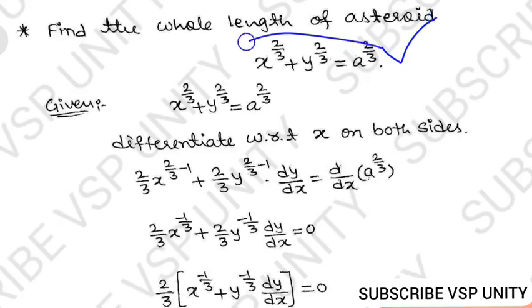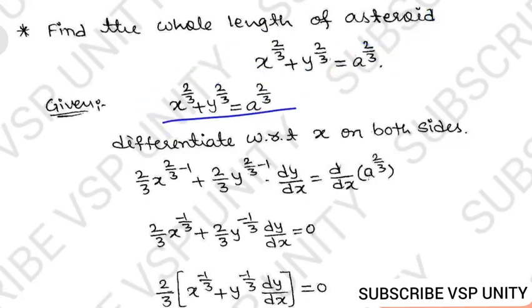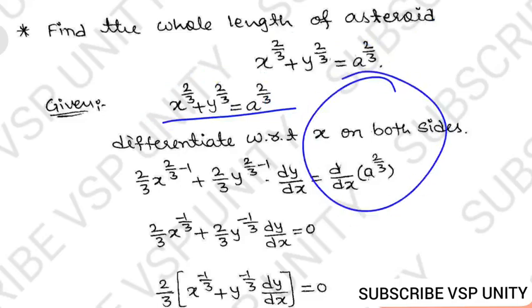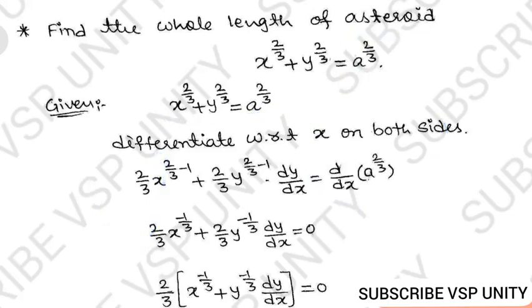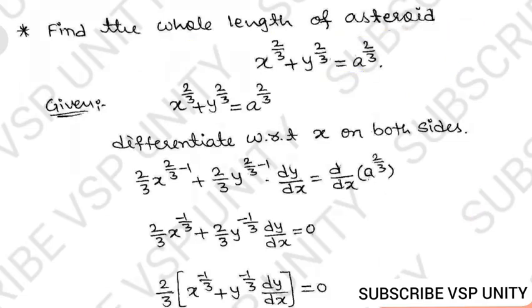The equation of the asteroid is given. What is an asteroid? It is a shape in mathematics, like a circle, parabola, or hyperbola. We need to see its shape first, because the problem does not give limits of integration directly — we need to find the limits ourselves.